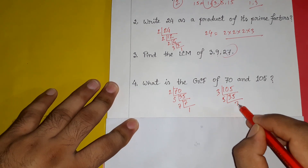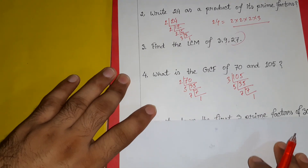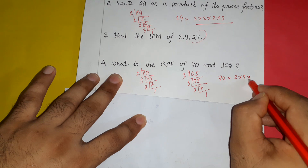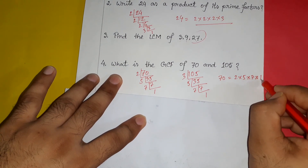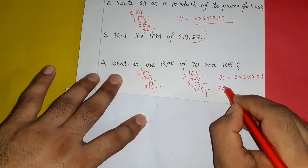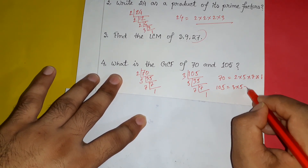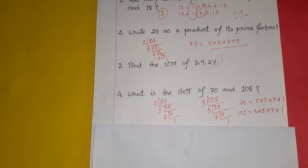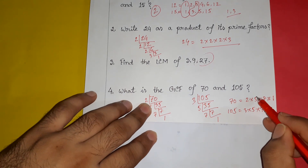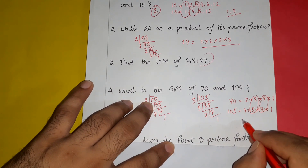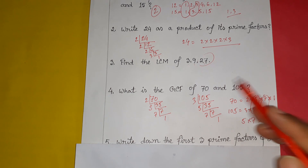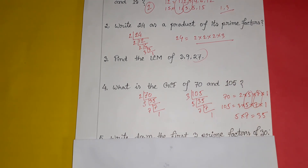And 105 equals 3 multiplied by 5 multiplied by 7. Looking at the common factors between 70 and 105, the common prime factors are 5 and 7. So 5 multiplied by 7 gives us 35. The GCF of 70 and 105 is 35.